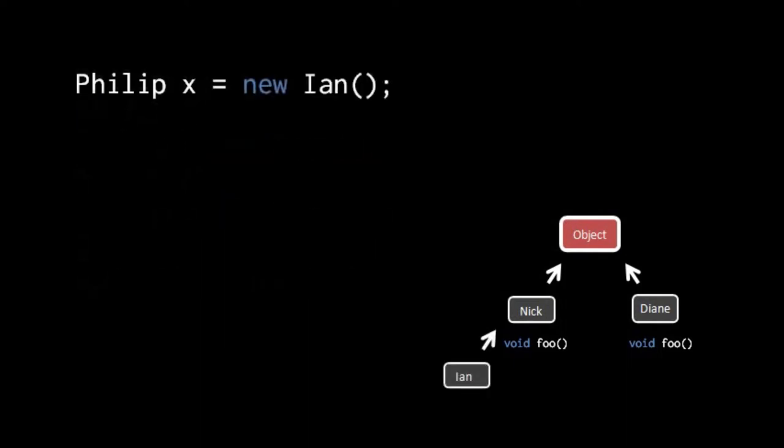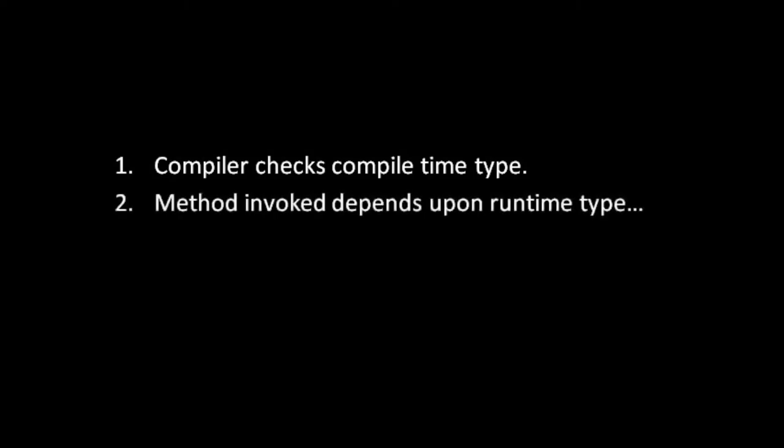When a class implements an interface, all descendants of that class are also considered to implement the interface. So if Nick has a subclass Ian, then Ian is considered a valid kind of Philip object. The compiler's role is to look at the compile-time type and determine if the method exists for that type, but because the actual type is not known until runtime, it's not determined until the method is called which version is invoked.